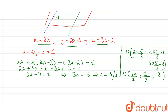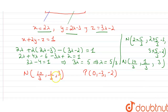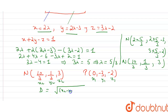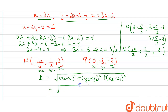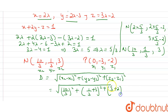Now we find the distance between point N = (10/3, 1/3, 3) and the given point (0, -3, -2). Using the distance formula: d = √[(x2-x1)² + (y2-y1)² + (z2-z1)²]. So d = √[(10/3 - 0)² + (1/3 - (-3))² + (3 - (-2))²] = √[(10/3)² + (1/3 + 3)² + 5²].